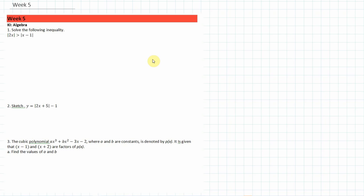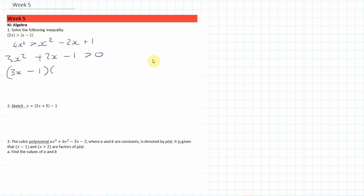The first one is a modulus question. I'm going to continue my normal practice of squaring both sides. I should get x squared minus 2x plus 1, and then bring everything across to the left-hand side to get 3x squared plus 2x minus 1 is greater than 0. We want to factorize this, so it's (3x minus 1)(x plus 1) is greater than 0.